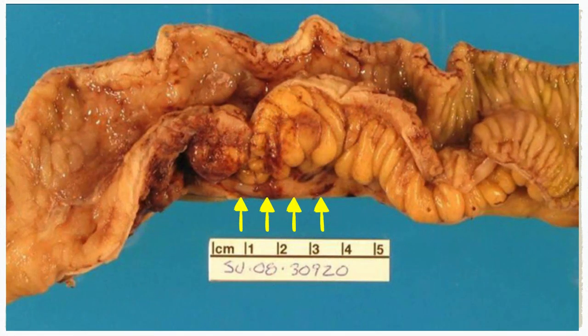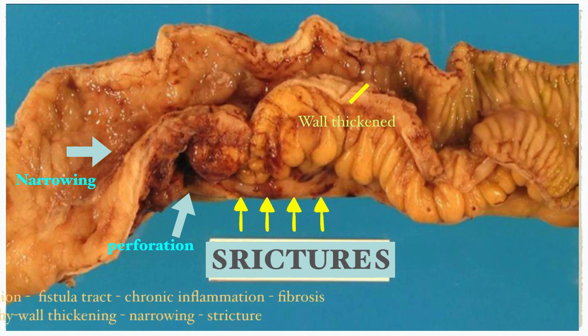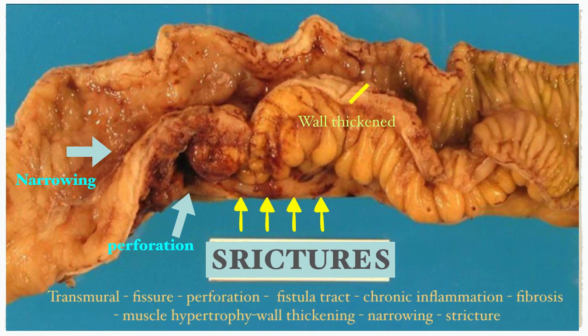This bowel segment obviously shows abnormality that we call strictures, which refers to the narrow part of the bowel. From the left, we can see the narrowing of the lumen beginning, areas of perforation, and thickening of the bowel wall. All this happens because of transmural inflammation that leads to fissure formation through the mucosal wall, causing perforation and fistula tract formation, which induces chronic inflammation causing fibrosis, muscle hypertrophy, and wall thickening — subsequently leading to narrowing and strictures in Crohn's disease.